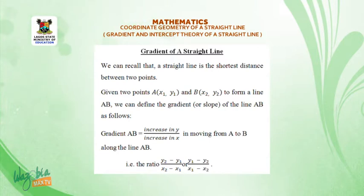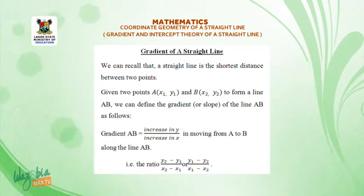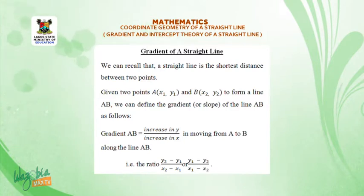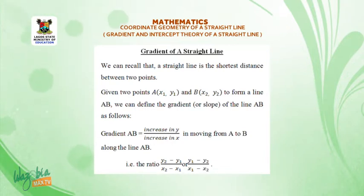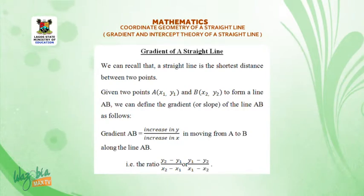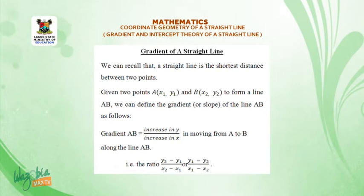Given two points A with coordinates (x₁, y₁) and B with coordinates (x₂, y₂) forming a line AB, we can define the gradient or slope of line AB as follows: gradient AB is equal to increase in y over increase in x, moving from A to B along the line AB. That is the ratio (y₂ - y₁) / (x₂ - x₁), or equivalently (y₁ - y₂) / (x₁ - x₂).